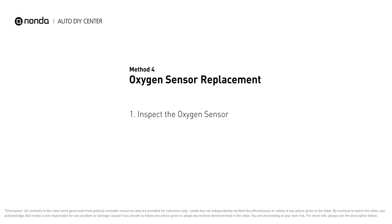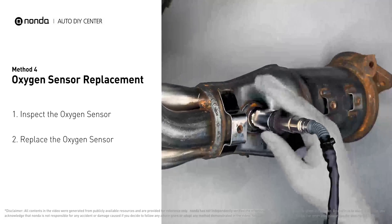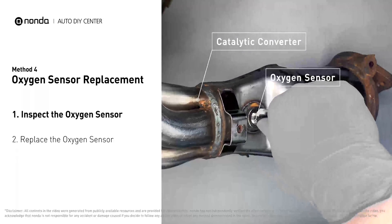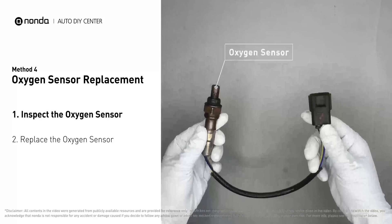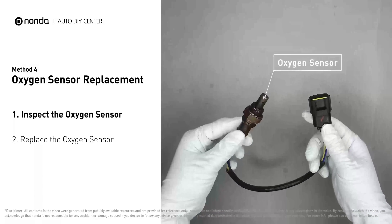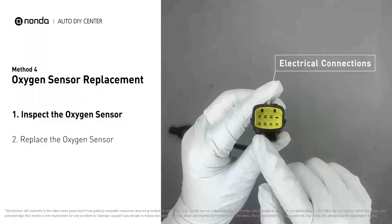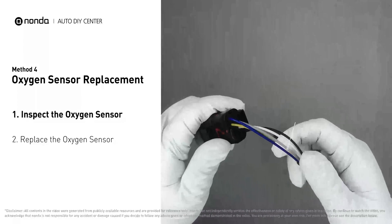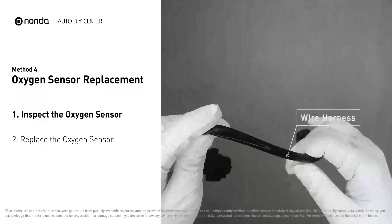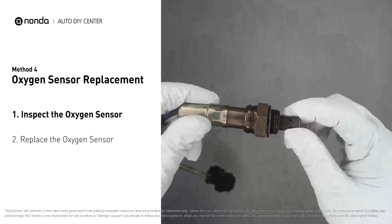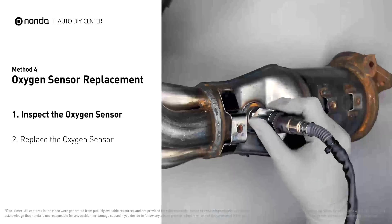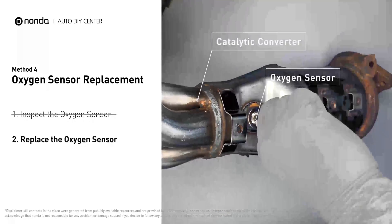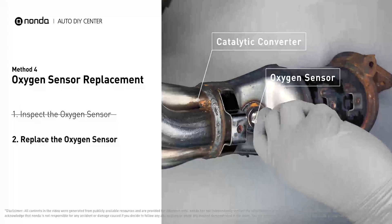Method 4: Oxygen sensor replacement. Carefully remove the oxygen sensor from the catalytic converter. Visually check the oxygen sensor's electrical connections, wire harness, and metal tabs for any damages. If damages are found, replace the oxygen sensor.